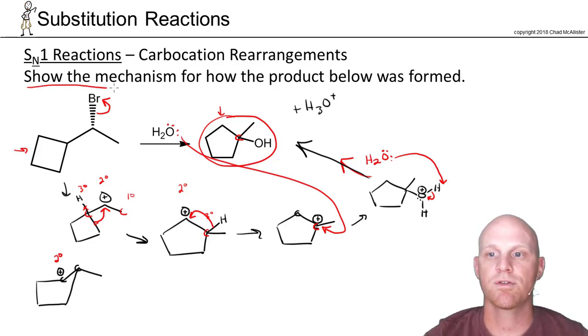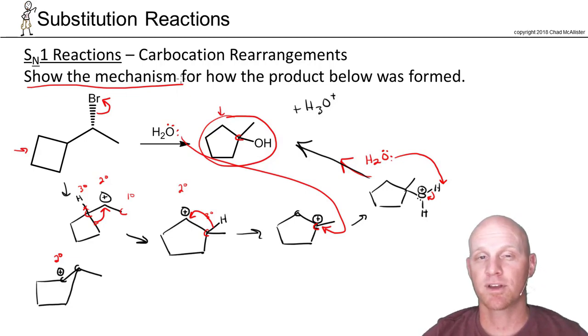Note the question says 'show the mechanism.' Generally, we won't have you predict these complicated ring expansion products. It's usually not a predict-the-product type question. Even the researcher might not have expected this product, but if you formed it, the question is: show how it was formed. That's generally how this kind of question is asked, not as a predict-the-product question.